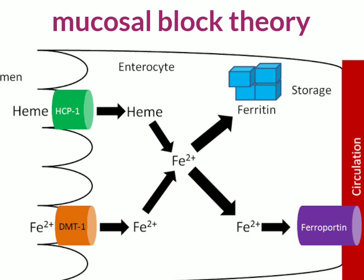Whenever the iron amount in the body is reduced, absorption is enhanced. But when iron is stored in adequate quantity, absorption is decreased. This mechanism is called the mucosal block theory of iron absorption. The unique feature of this iron metabolism is that homeostasis is maintained at the level of absorption, not at the level of excretion.